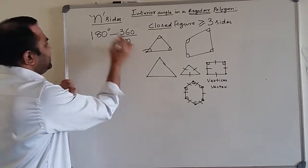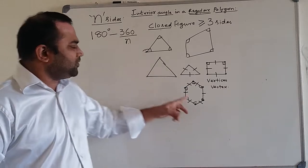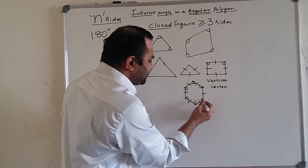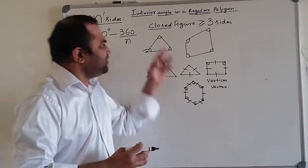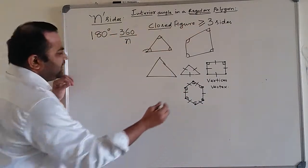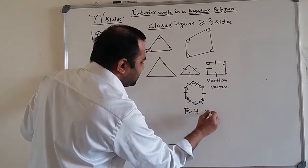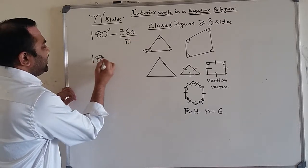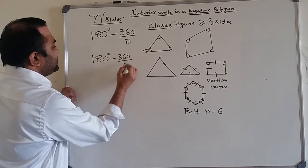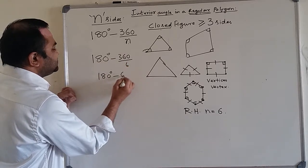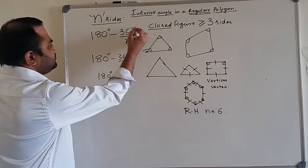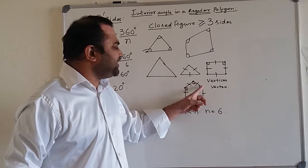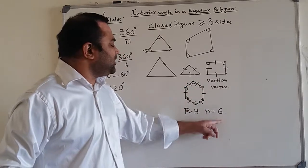Let us apply this formula to a regular hexagon to find the measure of each interior angle. In a regular hexagon, all angles are equal because the polygon is regular. The number of sides is 6, so we put n = 6: 180 minus 360 divided by 6 equals 180 minus 60, which equals 120 degrees. So each interior angle in a regular hexagon measures 120 degrees.